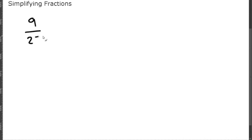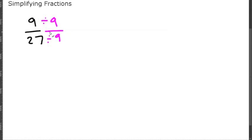Now, we have nine twenty-sevenths. Two does not go into both evenly. Three? Yes, three goes into nine and it also goes into twenty-seven. But is that the greatest number that can divide both of them? No, it's not. Because if you look at this, we know that nine goes into twenty-seven, and nine is going to be the biggest number we can divide both by. So, nine divided by nine is equal to one, and twenty-seven divided by nine is equal to three. So, nine twenty-sevenths equals one-third.